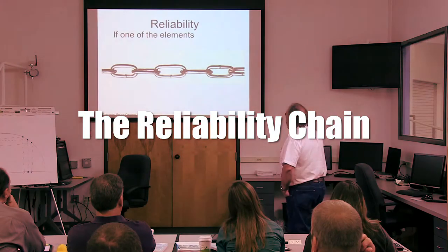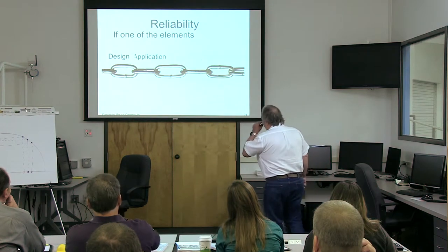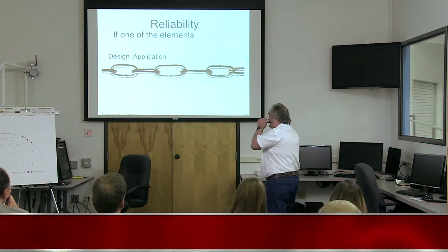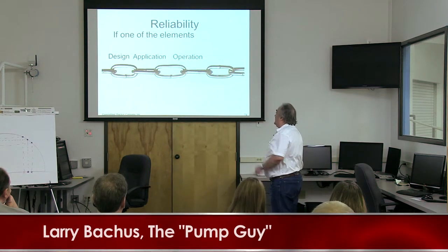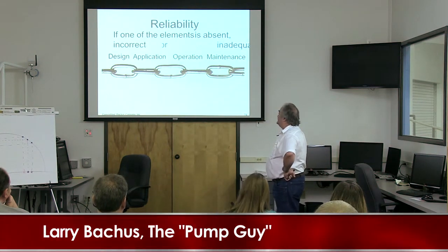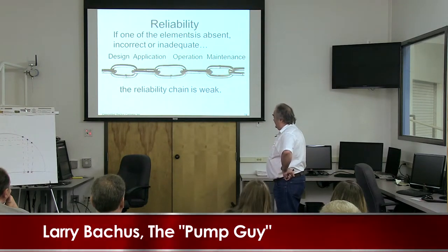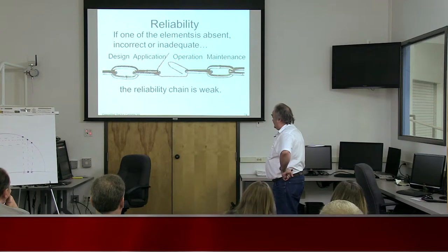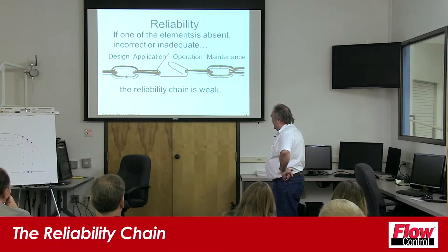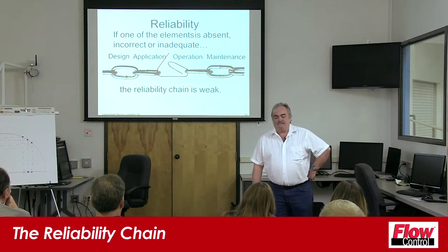If one of the elements — either design or application or operation or maintenance — is absent or incorrect or inadequate, then the reliability chain is weak. You can see the weak link right there in the reliability chain.